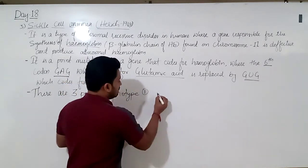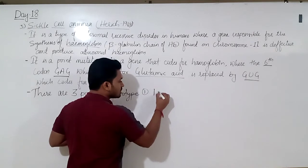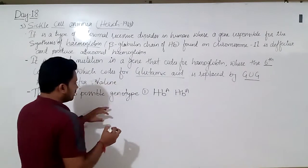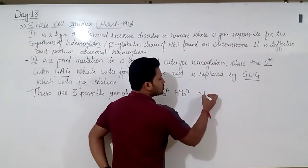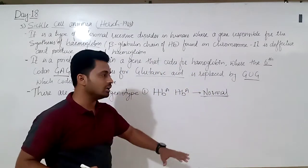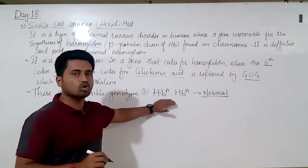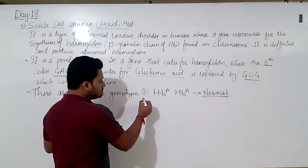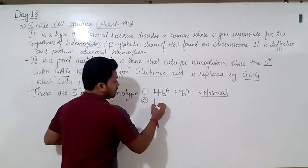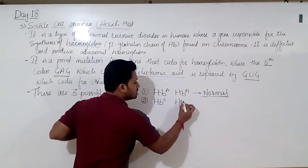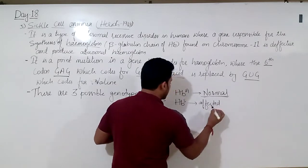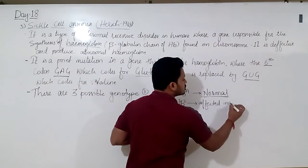The first genotype is HBA/HBA — these individuals are normal and healthy, having normal hemoglobin. The second genotype is HBS/HBS — these are fully affected sickle cell anemia individuals.